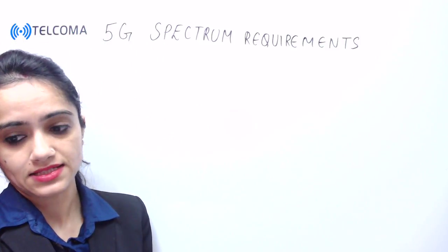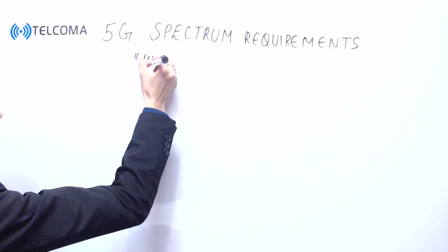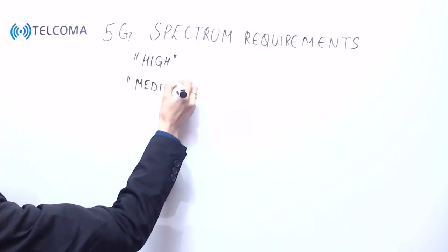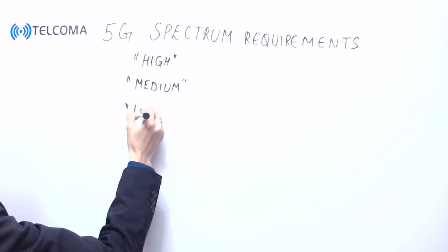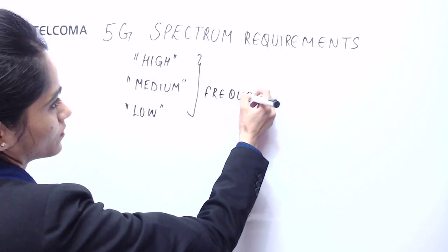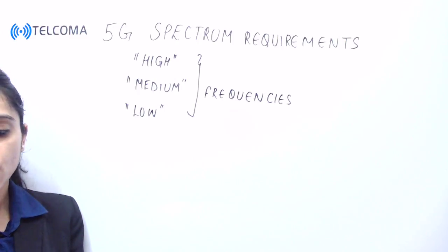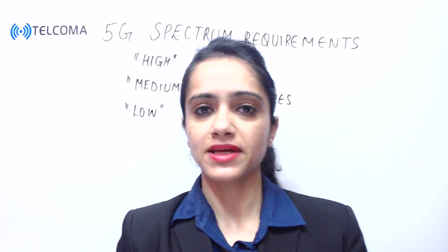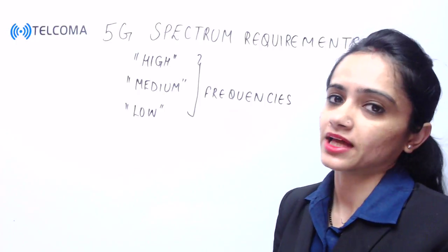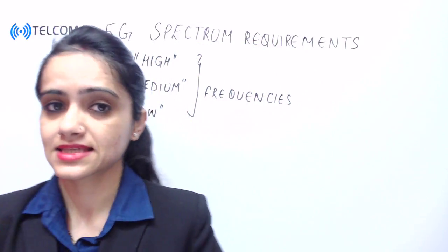5G requires access to high, medium, and low frequencies because we have various diversified applications. To access those applications we require a range of high, medium, and low frequencies so that we can meet the 5G requirements. We have frequencies between 2 and 6 gigahertz.